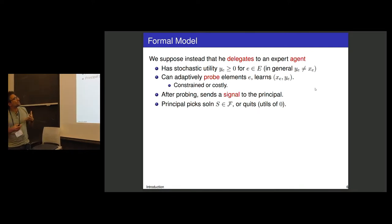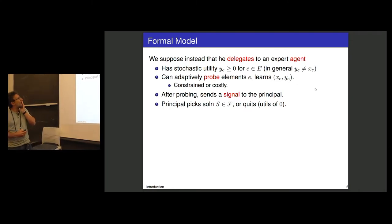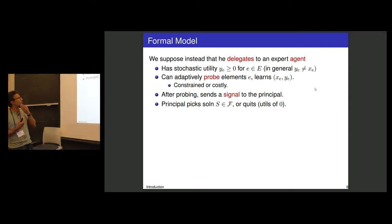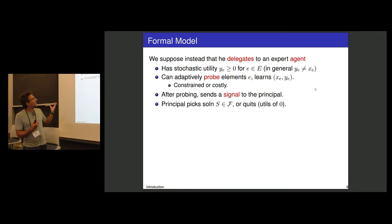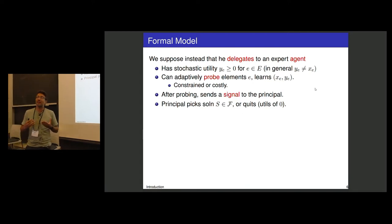Instead, we suppose the principal considers delegating this to an expert agent who is better equipped to do the probing. The agent also has stochastic rewards y_e for each element, which may differ from the principal's. The agent performs the probing adaptively, and after probing, sends a signal to the principal who then uses that information to select a feasible solution.